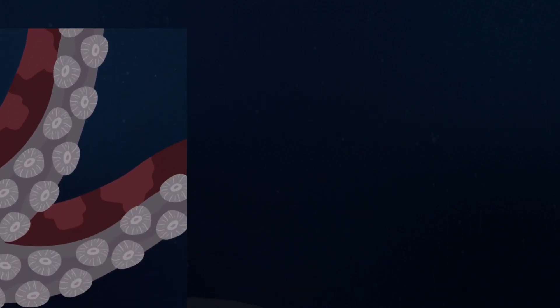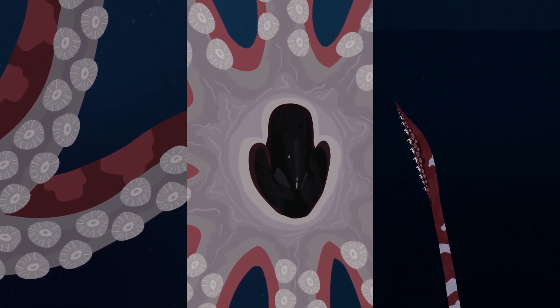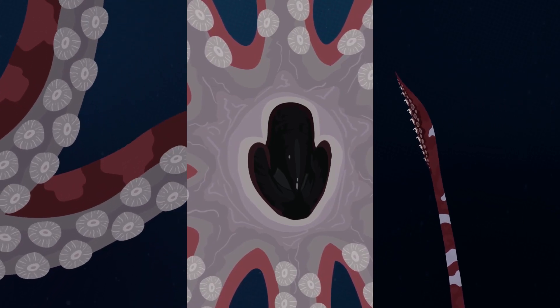The giant and colossal squid leave nasty marks all across the sperm whale's body, using their sucker teeth, powerful beaks, and tentacle hooks to inflict wounds.